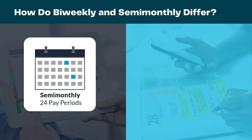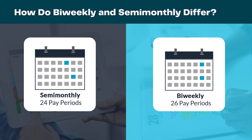The upside to semi-monthly payroll is that benefit deduction and accounting are easier to manage. Bi-weekly involves being paid every other week, generally on Friday. This provides employees with 26 paychecks in a year as opposed to the 24 payouts of semi-monthly. This means there will be two months out of the year where three paychecks are distributed. Bi-weekly allows for a more consistent payday and balanced pay schedule throughout the year.